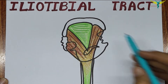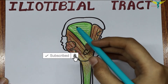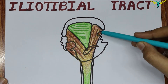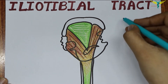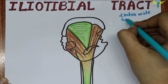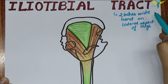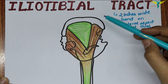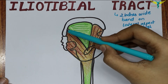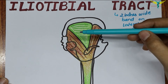The iliotibial tract is a modification of the fascia lata, in which the fascia lata is thickened on the lateral aspect of the thigh to form a 2-inch wide band. Superiorly, along the iliac crest, the tract splits into two layers.